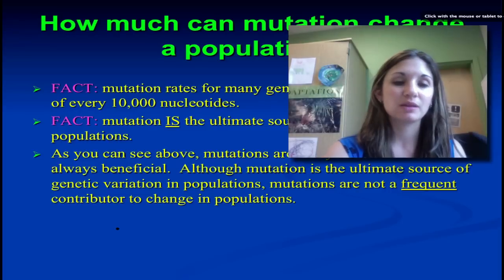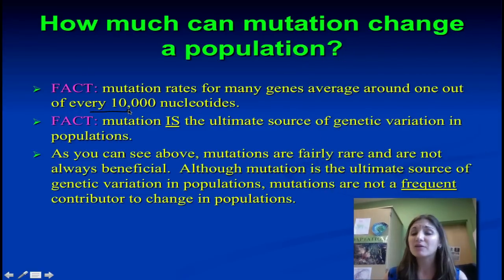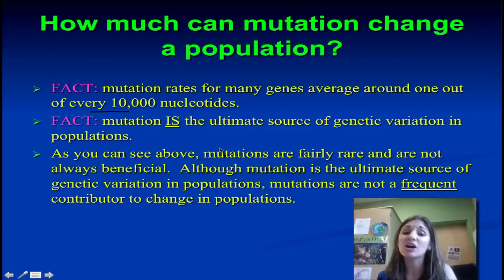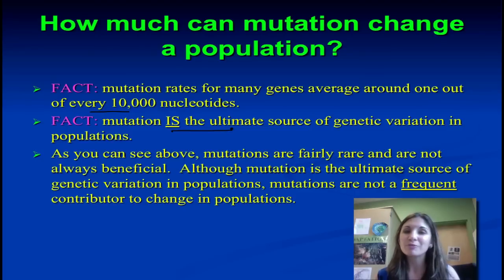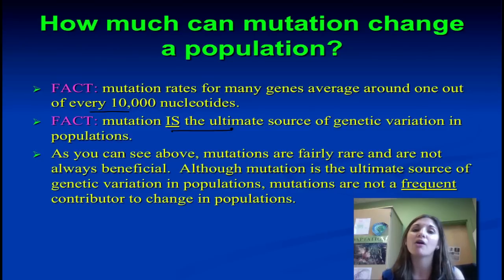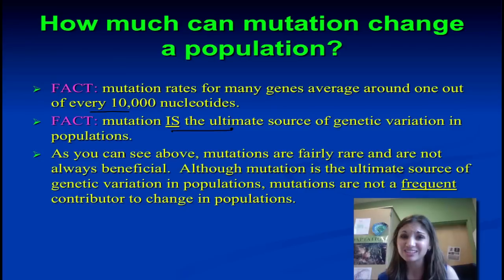Mutation does impact about one out of every 10,000 nucleotides and it is the ultimate source of genetic variation. But in order for it to really make a change in a generation time period, you have to accumulate enough mutations in that gene of interest. From a generation-to-generation standpoint, it really is not a significant or frequent contributor to change in that population. But remember it is the ultimate source — if mutation didn't exist, we would all be clones with very little genetic diversity, and there would be nothing for natural selection to act upon.